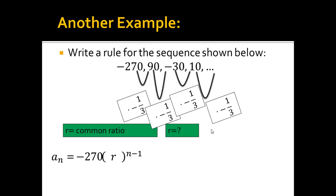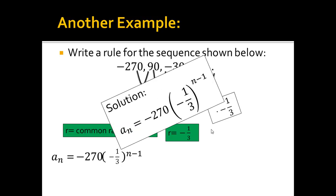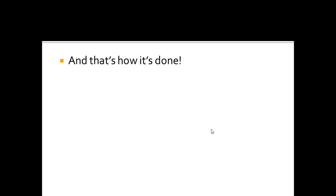And now, this is something I'm comfortable with. So I could just rewrite r instead of, like, dividing by 3 because I don't know how to write that. I can say it's multiplying by negative 1 third. And so that's my rule, negative 270 times negative 1 third to the n minus 1 power. And that's how it's done. All right, good luck on the rest of these problems.